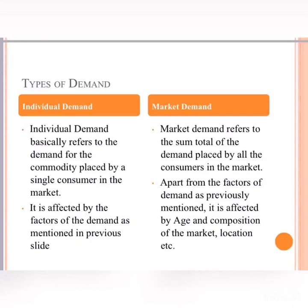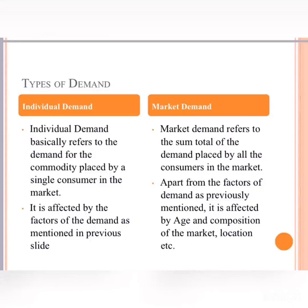Moving to the types of demand: demand is classified into two types — individual demand and market demand. Individual demand is the willingness and ability of a single consumer in the market. Market demand is the sum total of demand placed by all consumers in the market. To calculate market demand, we add individual demand of all consumers. Individual demand is affected by the factors already discussed, and market demand is additionally affected by age, composition, and location of the market.